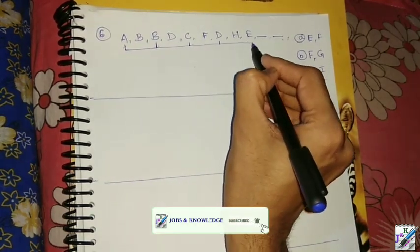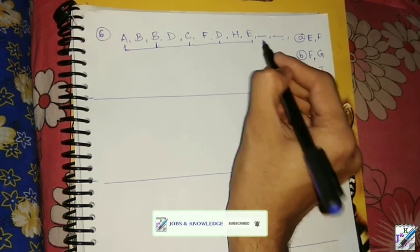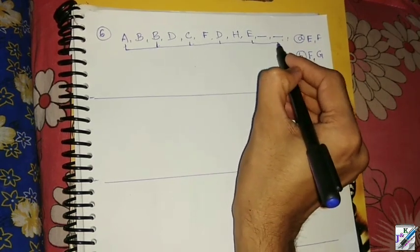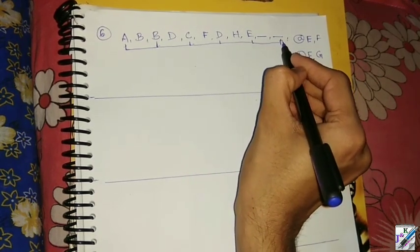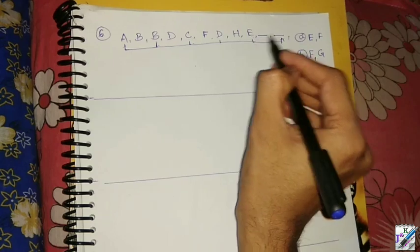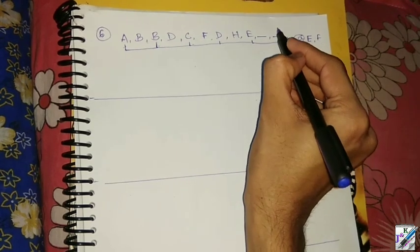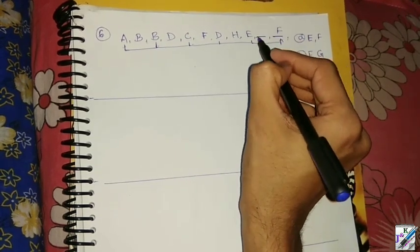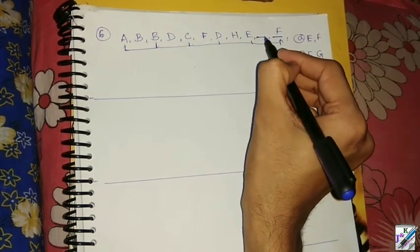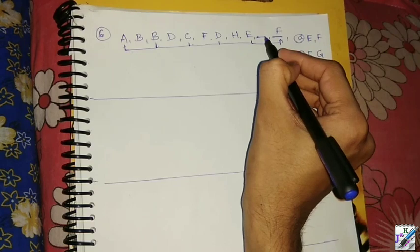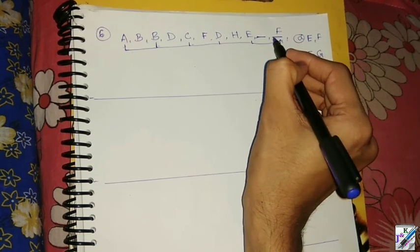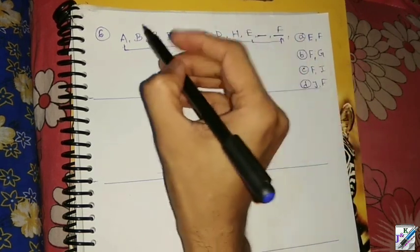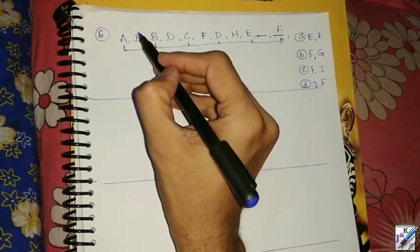We will start the alphabet. If you can sign for A, for example, the first stop will be equal to E, and the second stop will be equal to F, and the second stop will have equal to A. This is the second stop, so we can call it the first stop.